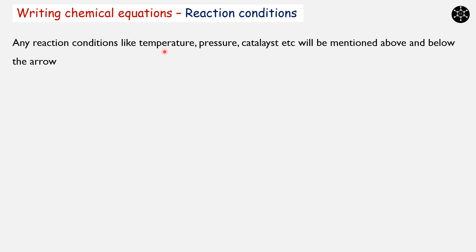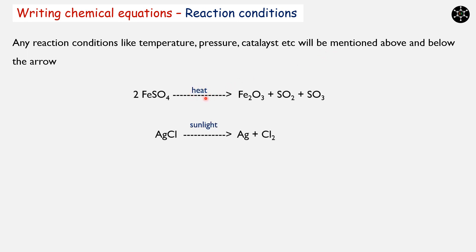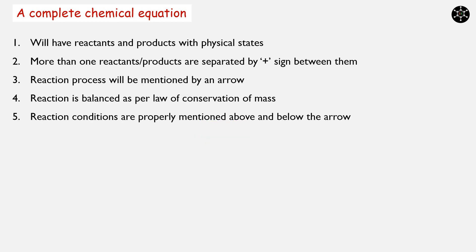Any reaction conditions like temperature, pressure, catalyst, etc. will be mentioned above and below the arrow. For example, heating is the condition mentioned above the arrow; in a second equation, sunlight is the condition. If we have more than one condition, some can be written above and others below the arrow. A complete chemical equation includes: reactants and products with physical states; more than one reactant or product separated by a plus sign; the reaction process shown by an arrow; the equation balanced as per the law of conservation of mass; and reaction conditions properly mentioned above and below the arrow.